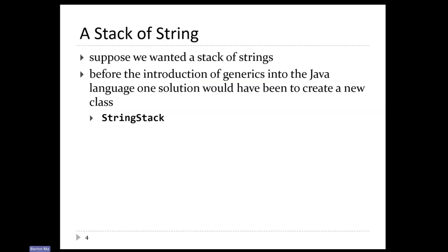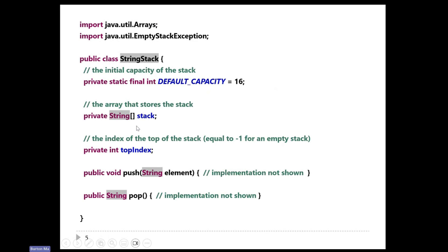If you wanted a stack of strings or a stack of anything else — a stack of dates, a stack of doubles — before Java introduced what they call generics into the language, one solution would be to make another class. If you wanted a stack of strings, you would make a new class called string stack. And if you looked at the implementation of string stack, you'd see it's basically a copy of int stack. Everything's the same, except your array is now an array of string instead of an array of ints. Your push method now pushes a string onto the stack and your pop method pops a string off the stack.